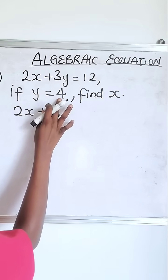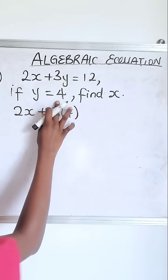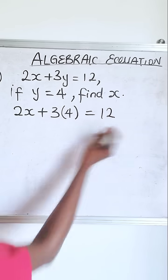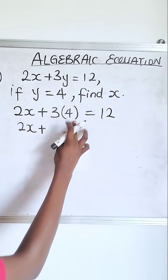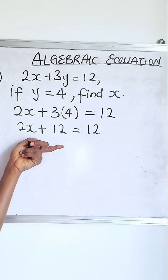Plus 3. Now instead of writing y, we're going to write the value that was given for y, and then you have equals 12. So 2x plus 3 times 4 is what? 12 equals 12.